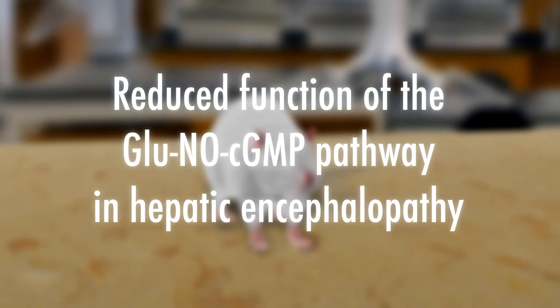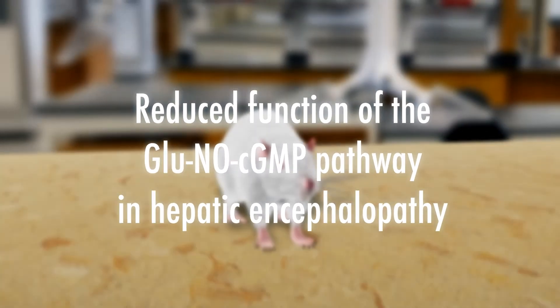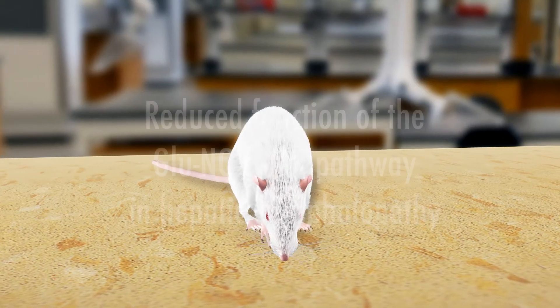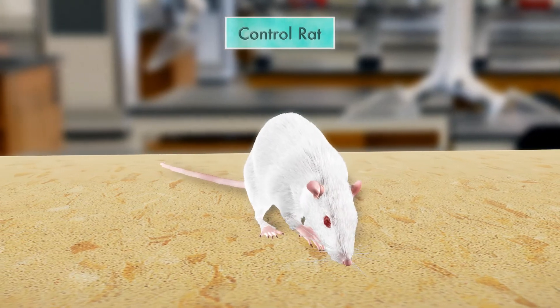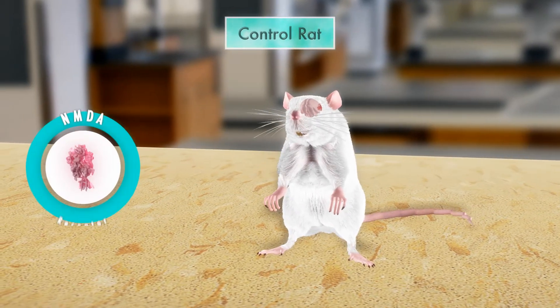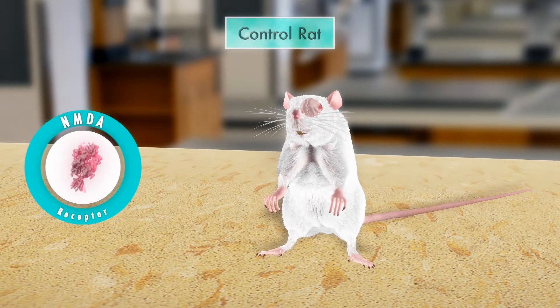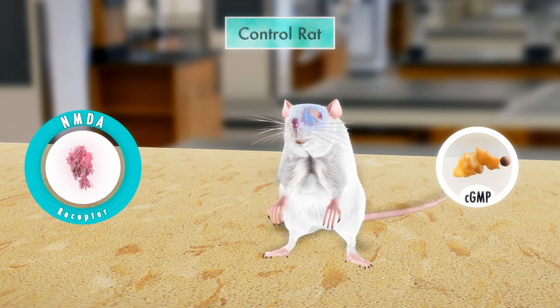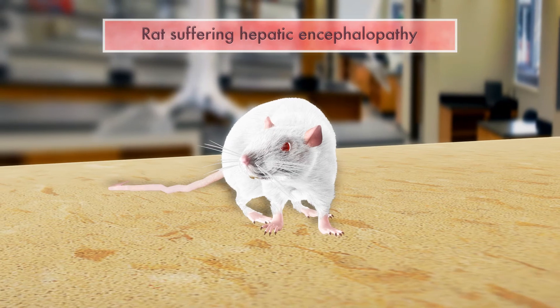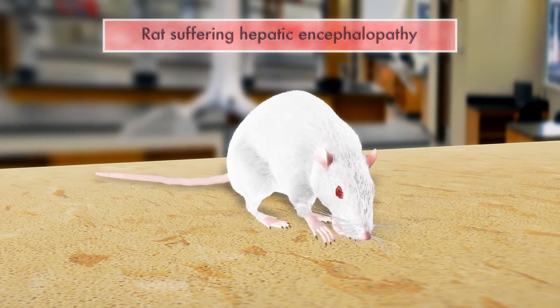Reduced function of the glutamate nitric oxide cyclic GMP pathway in hepatic encephalopathy. Under normal conditions, the administration of NMDA activates the receptor and the glutamate nitric oxide cyclic GMP pathway, producing an increase in the extracellular cyclic GMP in vivo.